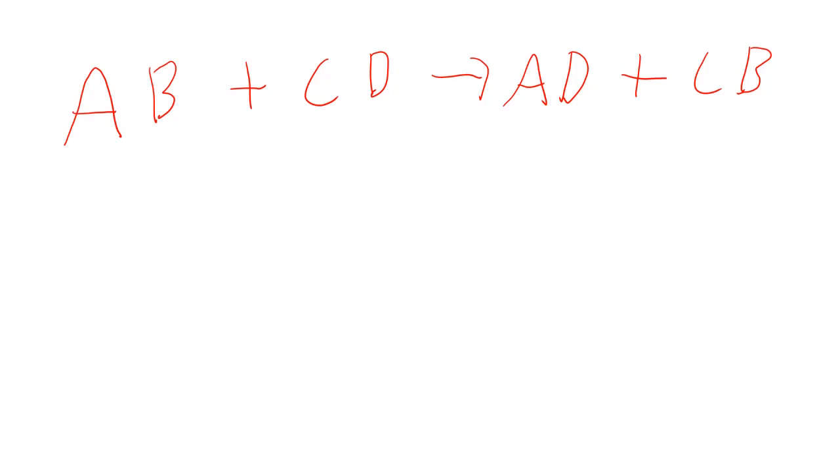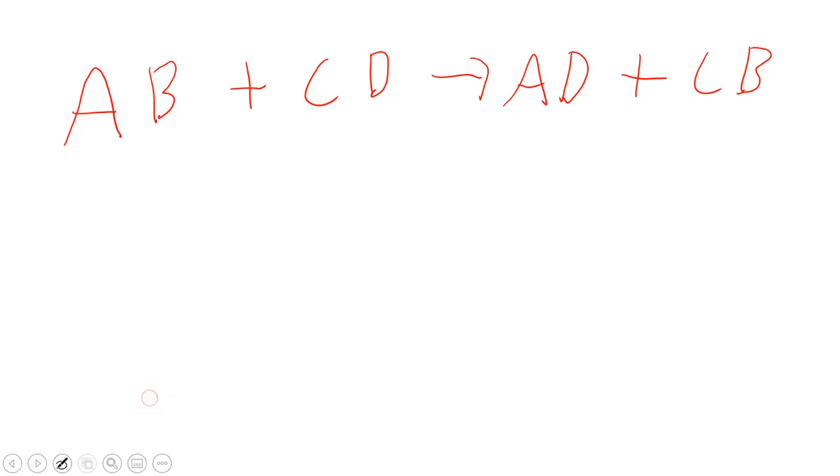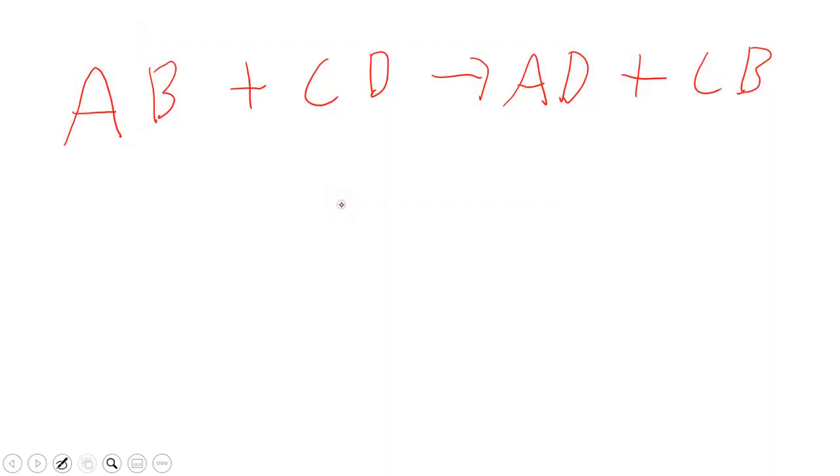We're going to walk through how to write one of the balanced equations and then I will let you do the rest on your own. For example, if we have something like AB plus CD, what happens is that these ions essentially swap partners.